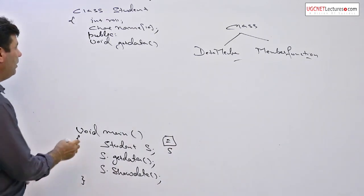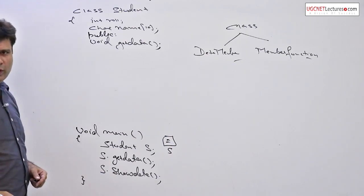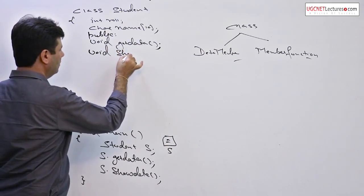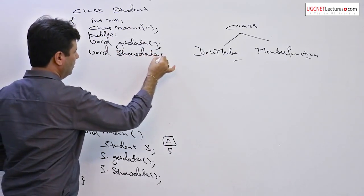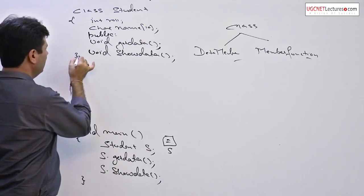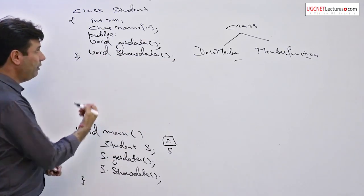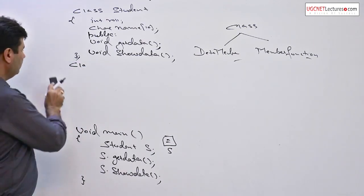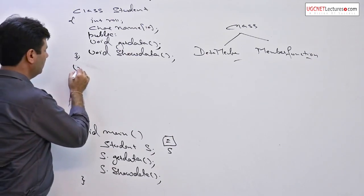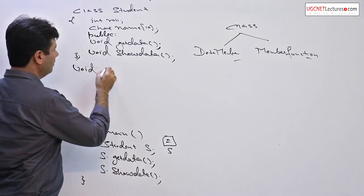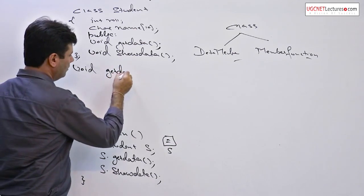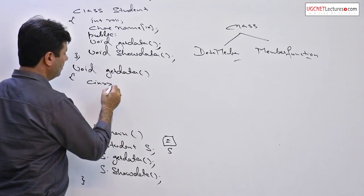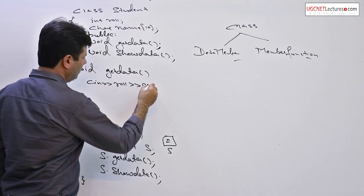I will declare the member functions within a class — void get data and void show data — then close the class. Now I will define them outside the class.